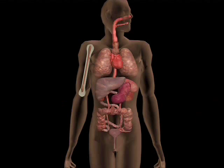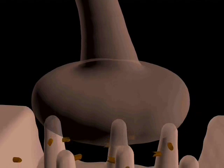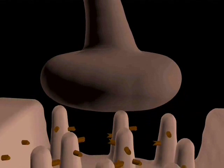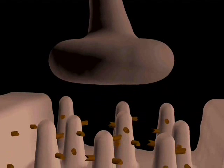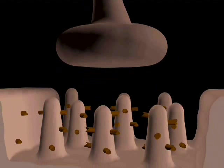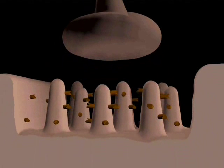An example of type 2 hypersensitivity is myasthenia gravis, an autoimmune disease which causes extreme muscle weakness. Here we see a nerve terminal situated above a neuromuscular junction. In a healthy person, a nerve impulse passes down the neuron, arrives at the nerve terminal, and causes the release of acetylcholine.